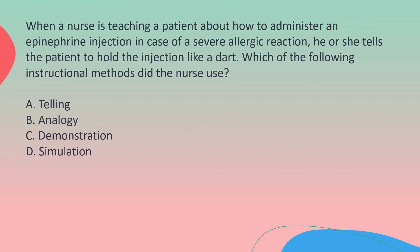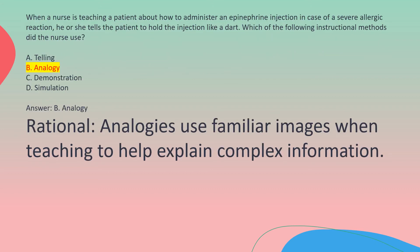When a nurse is teaching a patient about how to administer an epinephrine injection in case of a severe allergic reaction, he or she tells the patient to hold the injection like a dart. Which instructional method did the nurse use? A. Telling. B. Analogy. C. Demonstration. D. Simulation. Answer: B. Analogy. Rationale: Analogies use familiar images when teaching to help explain complex information.